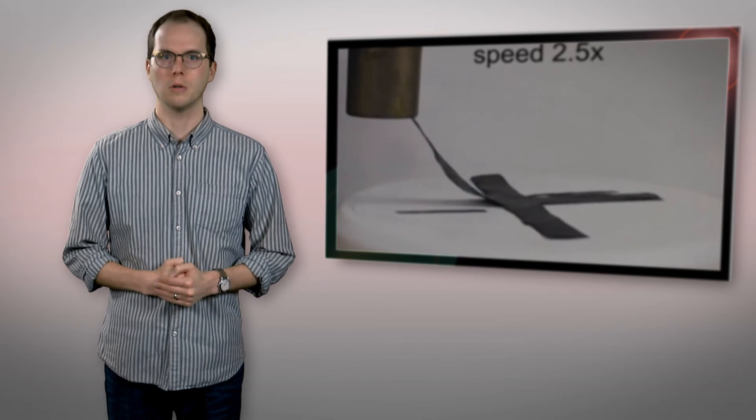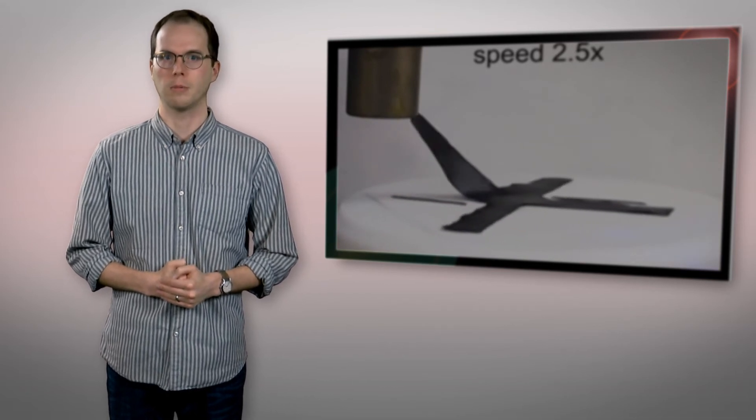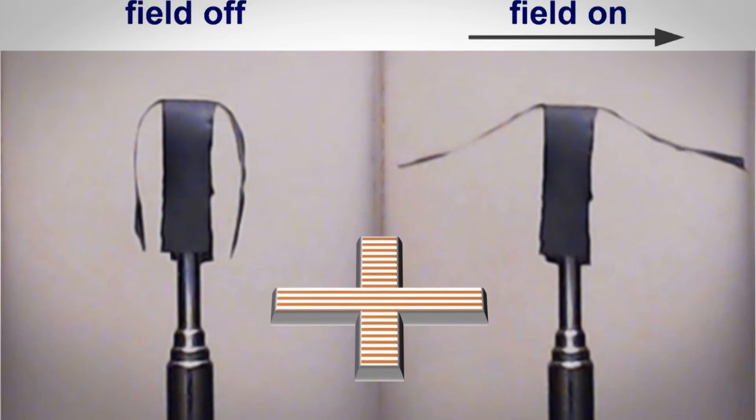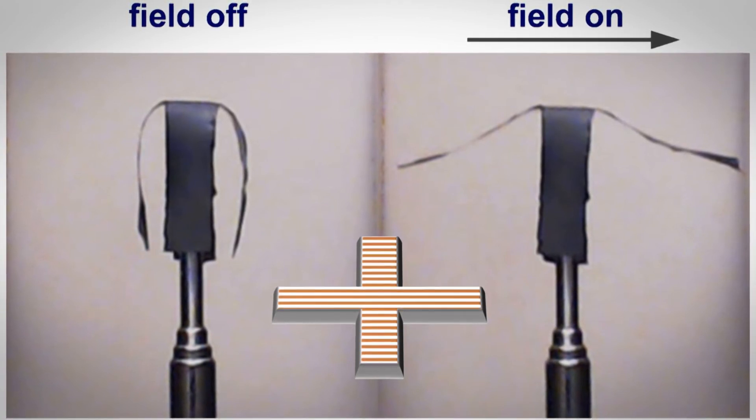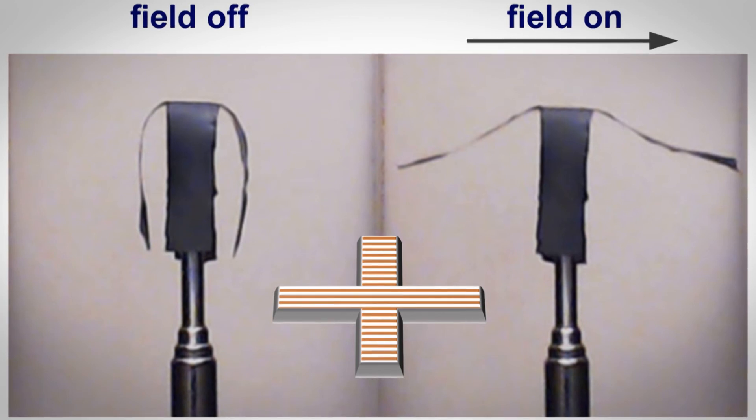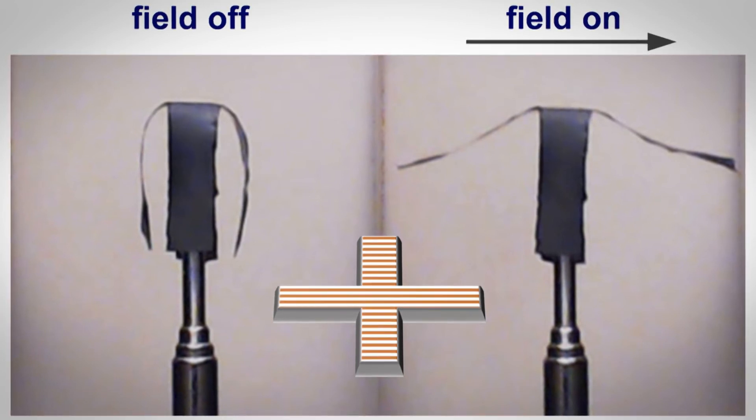NC State researchers used their system to create a structure that can lift up to 50 times its own weight, another device that mimics muscle movements, and a tube that functions as a pump. Early applications likely include drug delivery, but the system could also be used to remotely deploy novel structures.